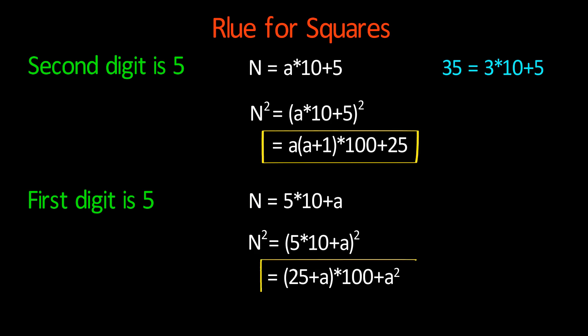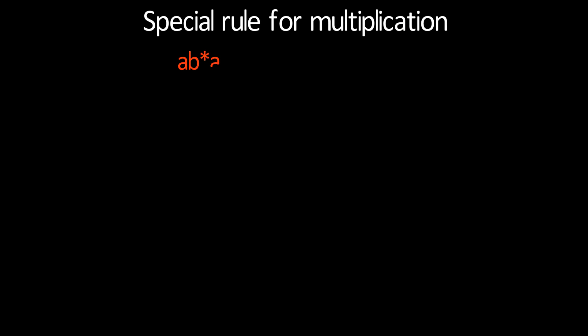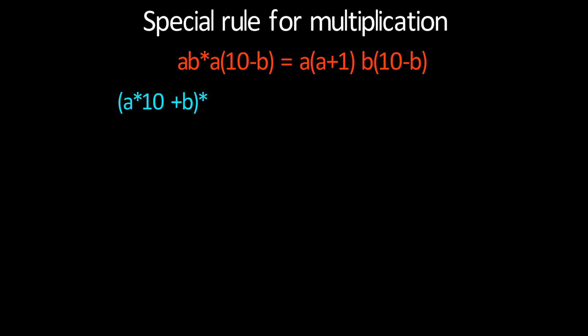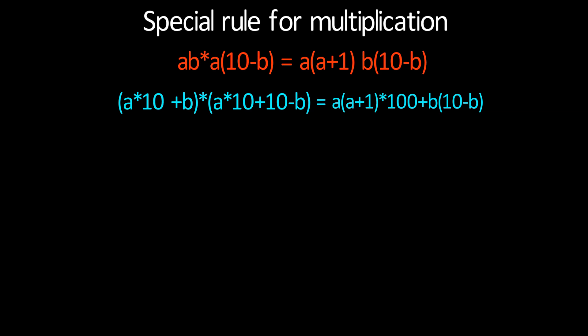Now a special rule for multiplication: ab times a(10 minus b) equals a times (a plus 1) times 100 plus b times (10 minus b). After expanding ab and (a times 10 minus b) and solving, we get our answer: a times (a plus 1) times 100 plus b times (10 minus b).